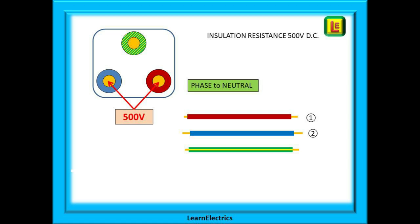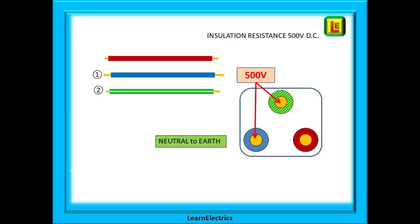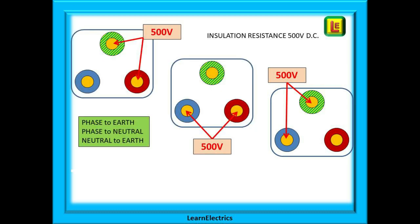Now test between phase and neutral — again we want high readings for a pass. And lastly, test between neutral and earth and expect the same high readings. That is the basics of insulation resistance testing: make sure phase, neutral, and earth are all separated; carry out a 500 volt test between pairs of conductors — phase to earth, phase to neutral, and neutral to earth — and expect readings of above 1 million ohms for a pass.